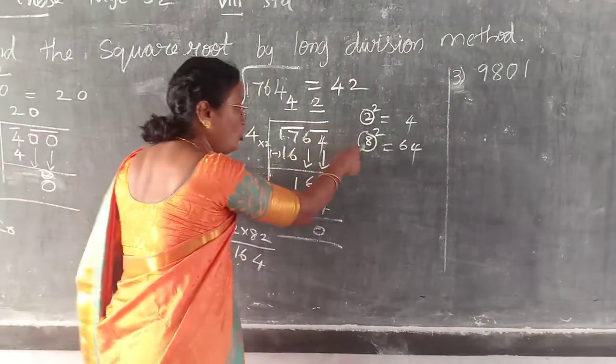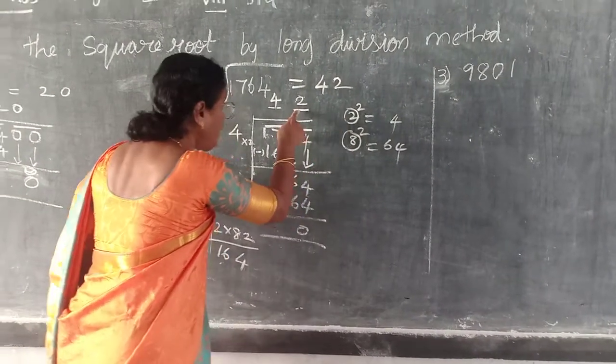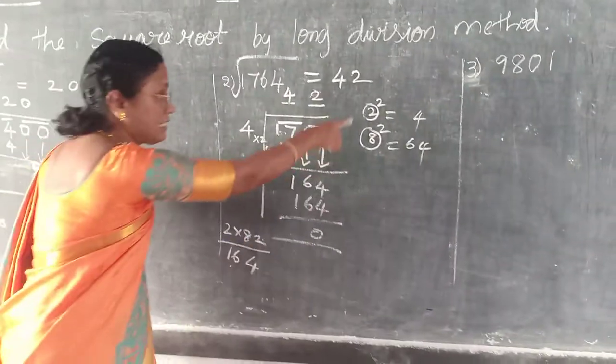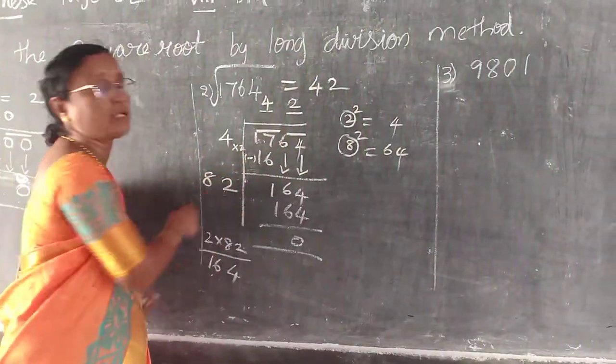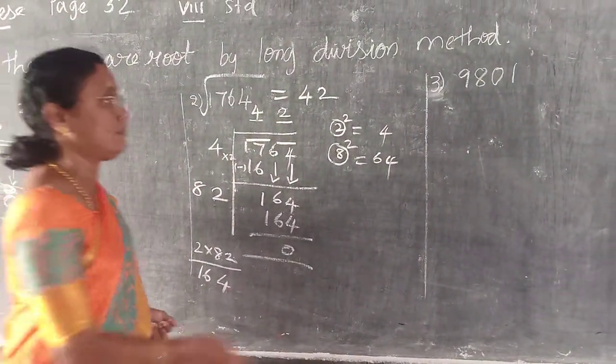So you should know these techniques — then only it is easy for you to select the number. In the technique there is a cycle number. Easy.